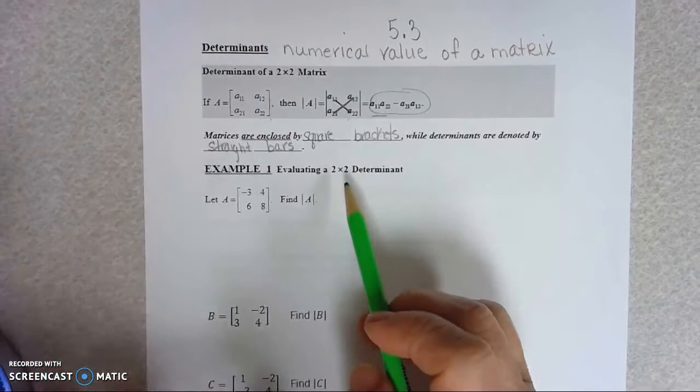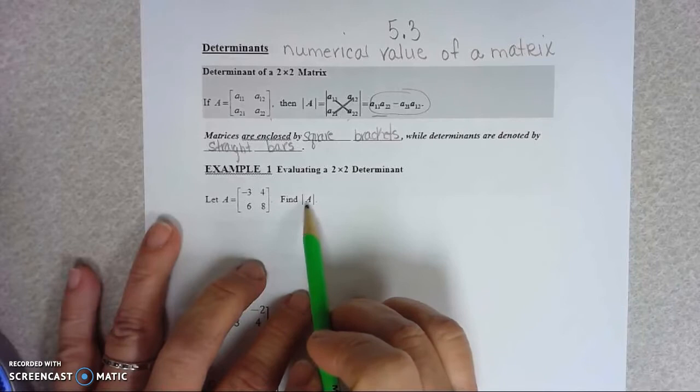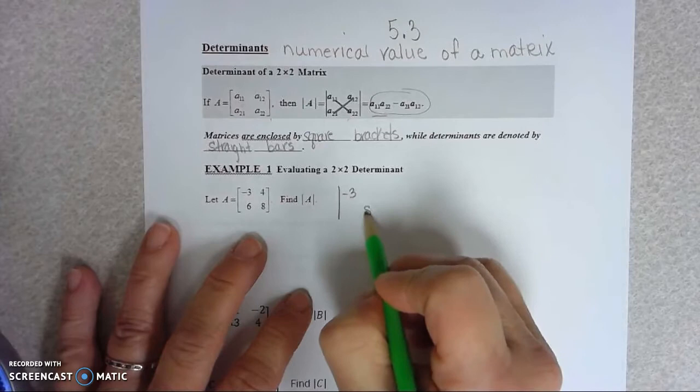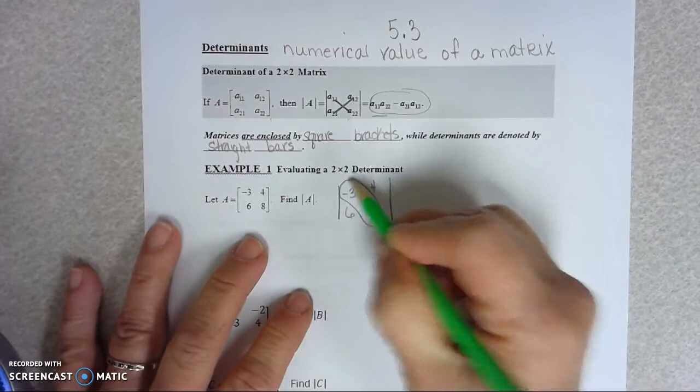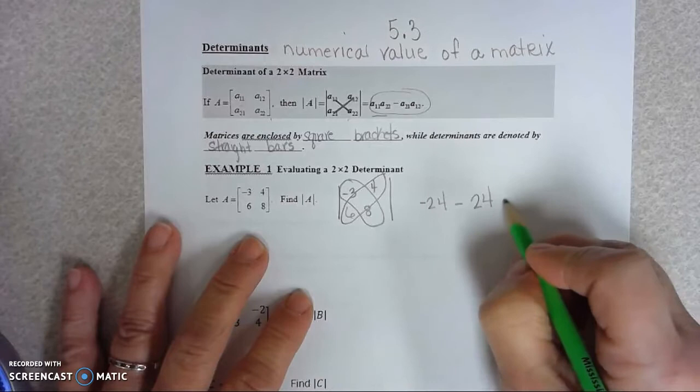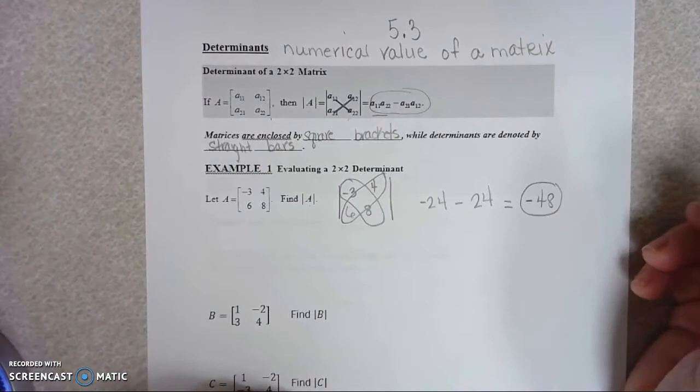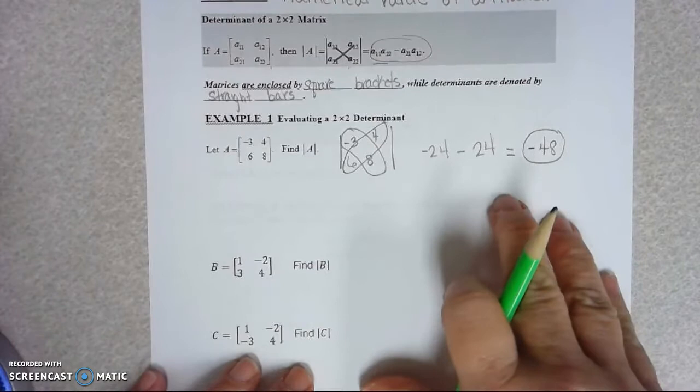So if we want to evaluate a two-by-two matrix, I have like three examples. Find A with these straight bars that is telling you to find the determinant or numerical value of matrix A. So that would be negative three, eight, four, six. So to do that, this product is negative 24 minus the other diagonal product, 24. So negative 24 minus 24, add them together or subtract them. And you got negative 48 for that determinant. It's just that simple.